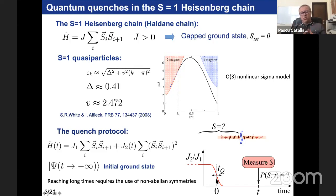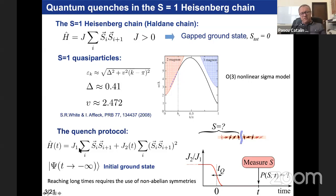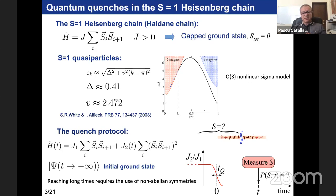We first initialize the ground state of the system: for given J1 and J2, we perform a DMRG calculation to get the ground state. Then at t=0, we switch off J2 and let the system evolve using the TEBD approach. There is a problem though: trying to reach relatively long times, we are forced to use non-Abelian symmetries, because our main goal is to cut the system in half and look at the distribution of the total spin.